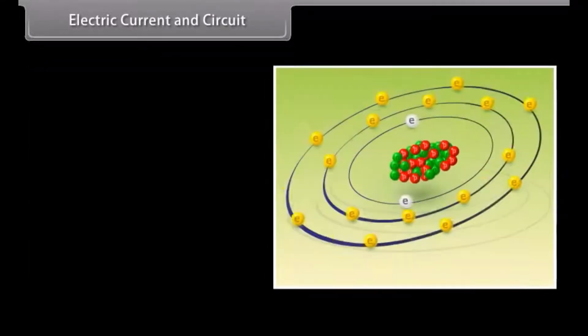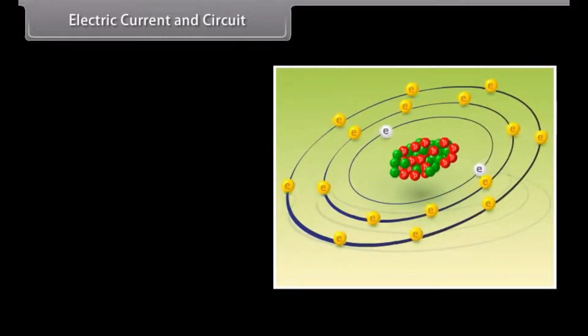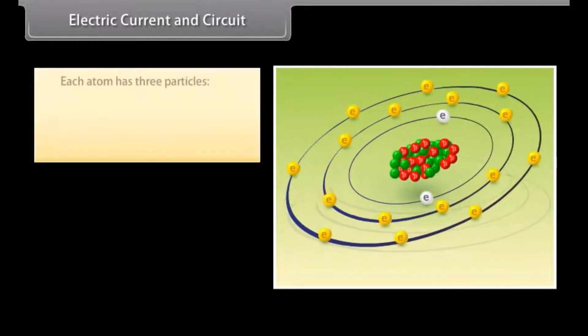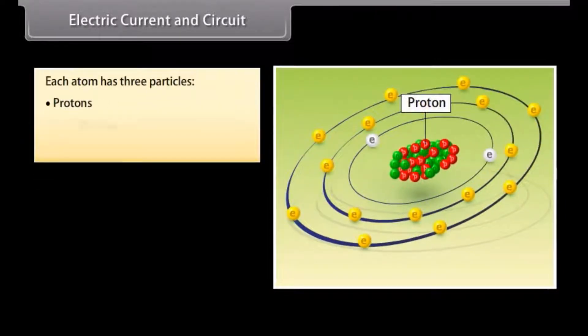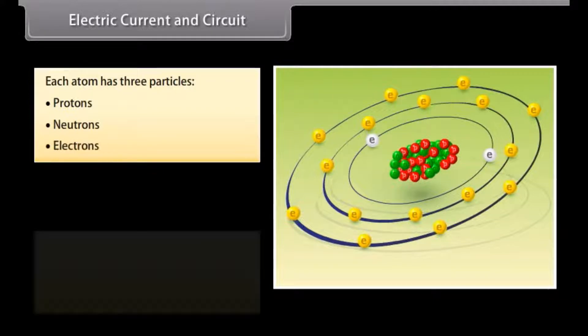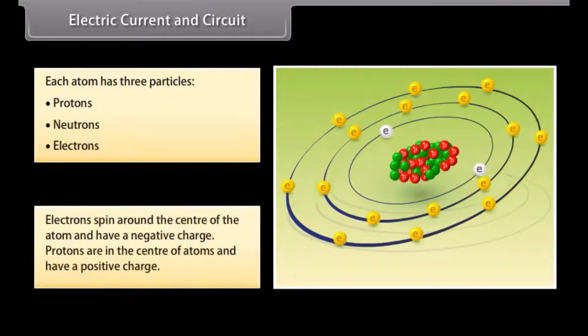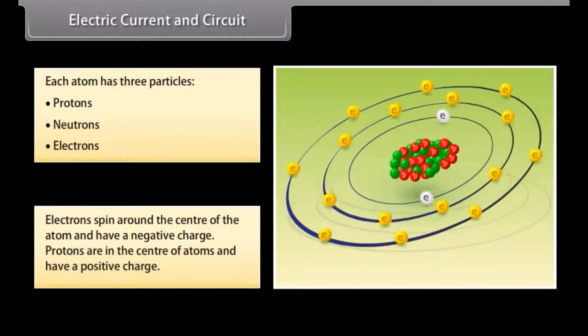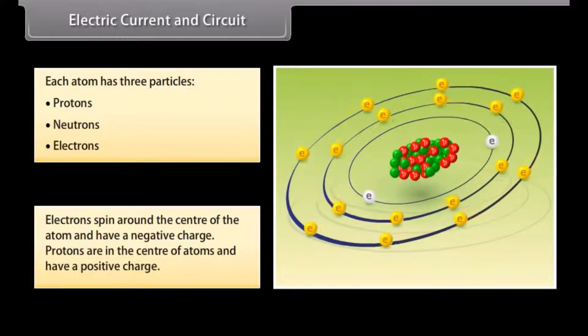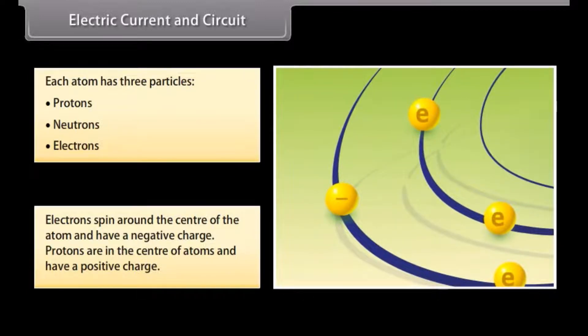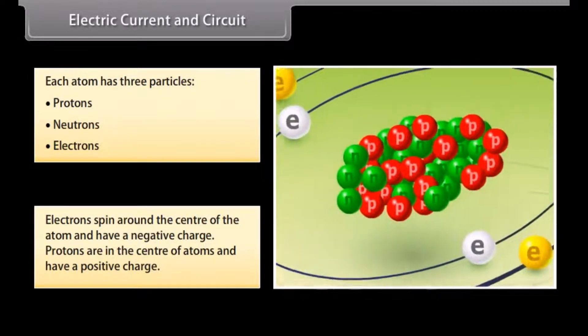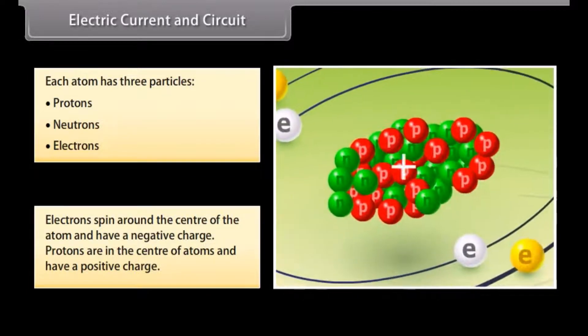All things around us are made up of atoms. Each atom has three particles: protons, neutrons, and electrons. Electrons spin around the center of the atom and have a negative charge. Protons are in the center of atoms and have a positive charge.